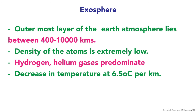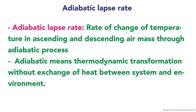The exosphere is the outermost layer of the Earth, lying between 400 to 1000 kilometers. The density of atoms is extremely low, and it predominantly contains hydrogen and helium gases. The adiabatic lapse rate is the rate of change of temperature in ascending and descending air masses through an adiabatic process — meaning a thermodynamic transformation without change of heat between the system and the environment. The normal decrease in temperature is 6.5 degrees Celsius per kilometer.